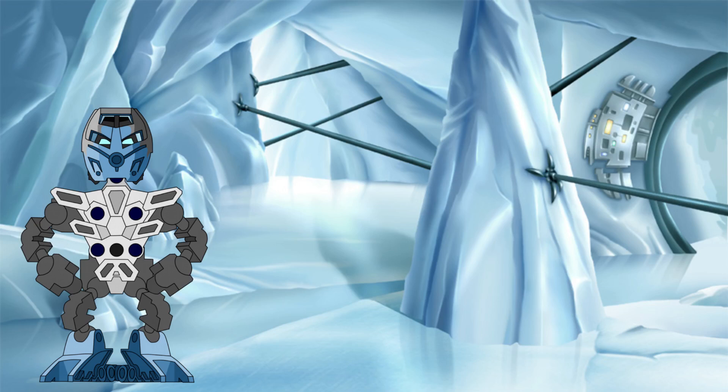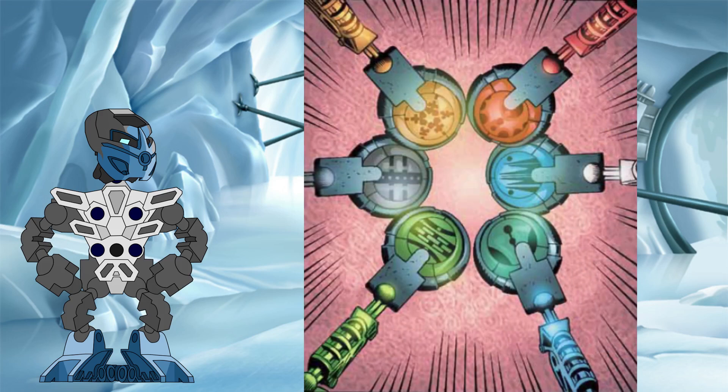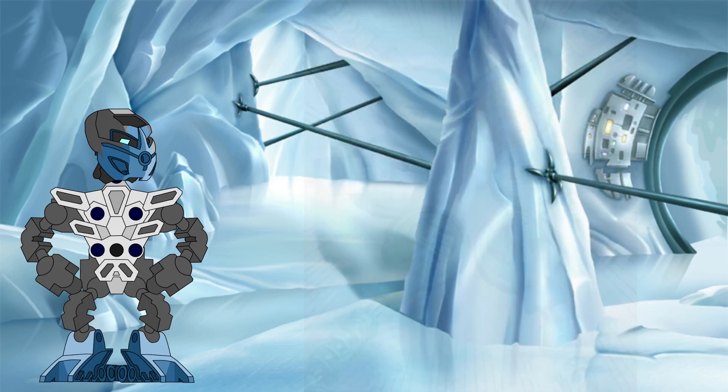Kanoka also come in nine separate power levels, with higher numbers denoting a stronger version of the discs' effects. Standard discs range from levels one to eight, while the ninth power level was only ever found within the six great discs that were the focus of the early 2004 story.